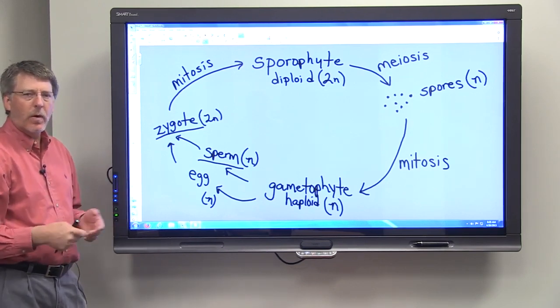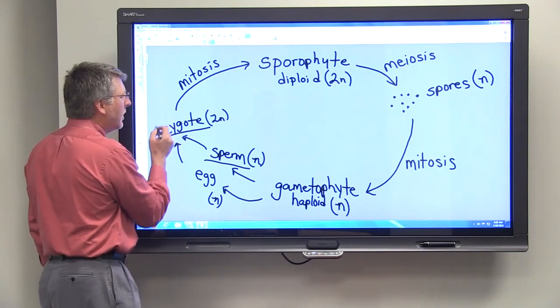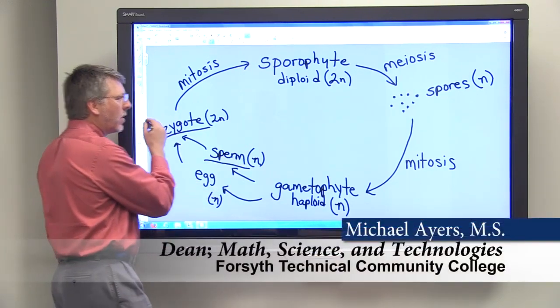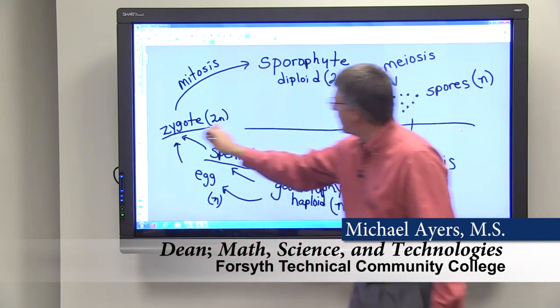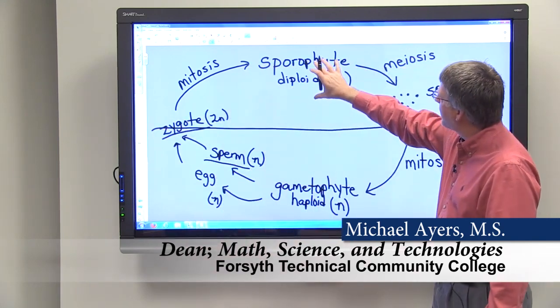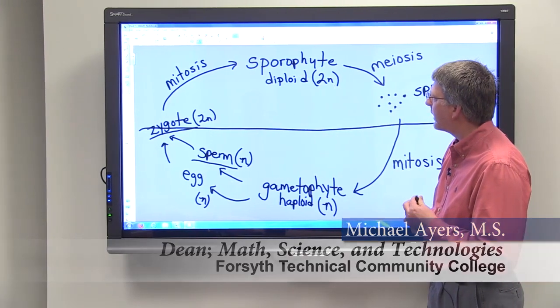So this is why it's called alternation of generations. And if I drew a line across, you can see, if I can actually make the line work, you can see that we alternate between the sporophyte generation and the gametophyte generation.